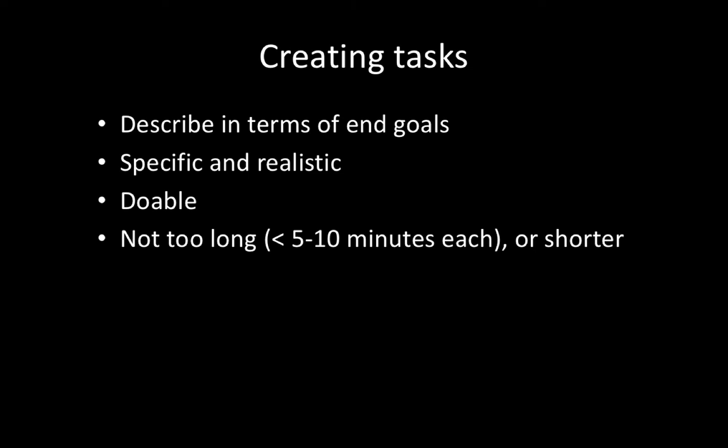Your task list should have about five to seven straightforward, doable tasks. Describe these in terms of end goals, not the features. So for booking a flight, you might say 'book a flight from Washington DC to Chicago' with the dates provided — but don't tell them which features to use or the step-by-step process, because a usability test is designed to help them figure that out without instructions. Tasks should not be longer than five to ten minutes.